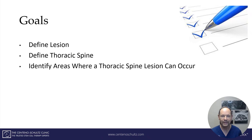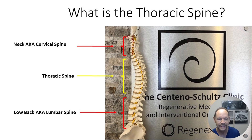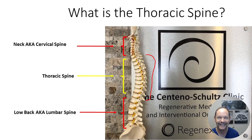The goals of this presentation are to define what a lesion is, what the thoracic spine is, and identify those areas where a lesion can occur in the thoracic spine. The thoracic spine is that section of the spine that's below the cervical spine and above the low back. You can see it depicted here in this side view — this section below the cervical spine and above the lumbar.